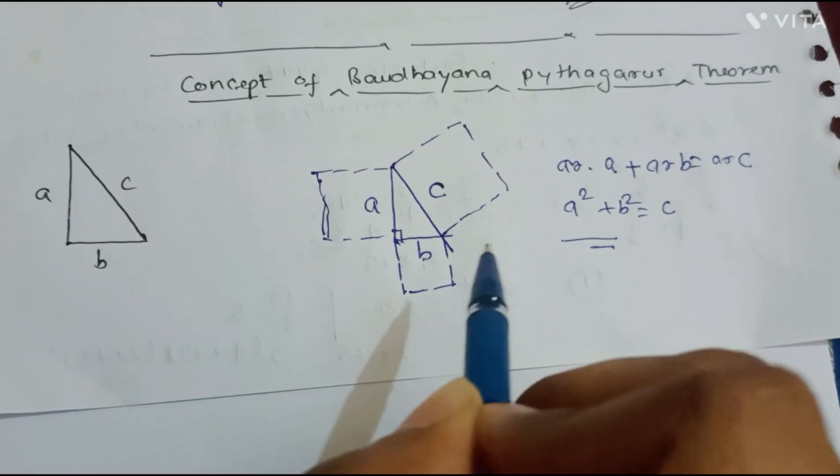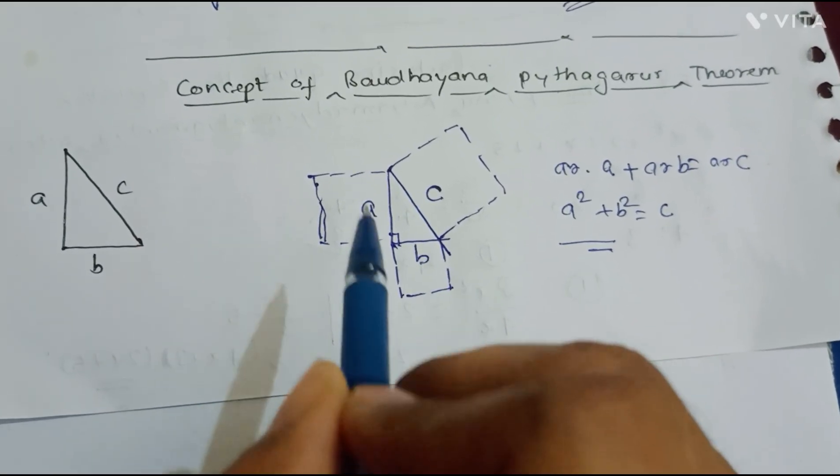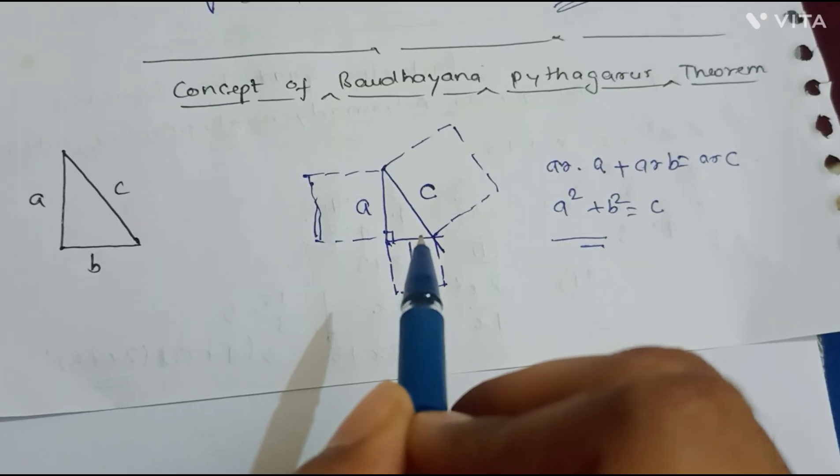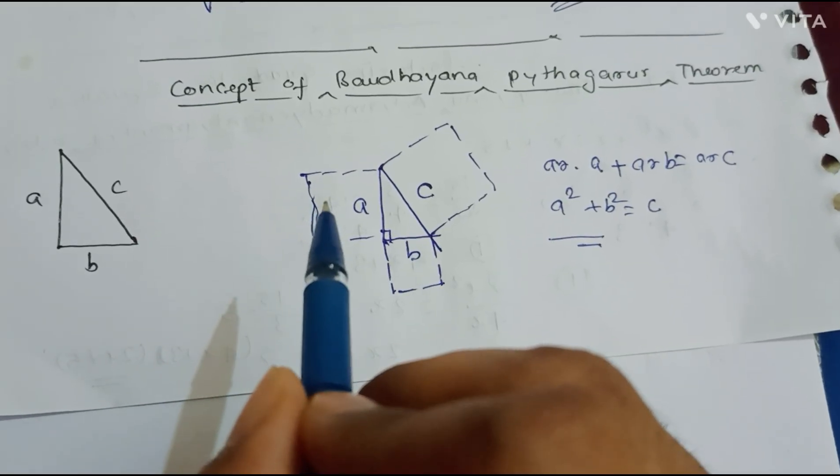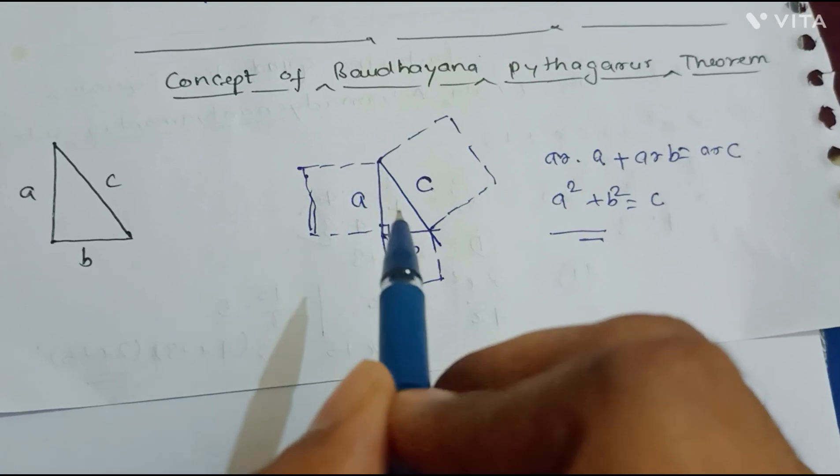And make a square from two of the sides that is perpendicular and base, then the area of both the squares will be equal to that of the area of the square which will be made by the hypotenuse side.